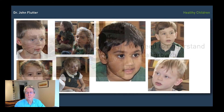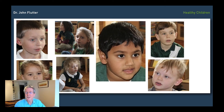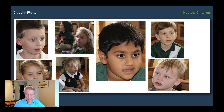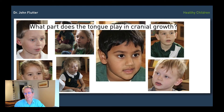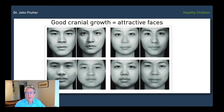The result of this mouth-open posture is that not only does the tongue fail to develop the maxillary arch, but where it does go — maybe in the lower arch — will have an effect on how the lower jaw grows and how the maxillary arch grows in relation to the rest of the cranium. Because when the cranial bones grow well, it produces attractive faces.